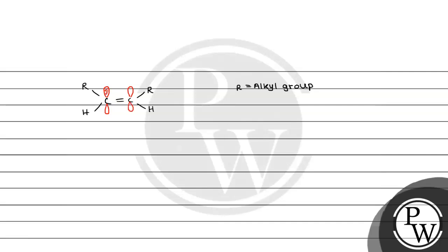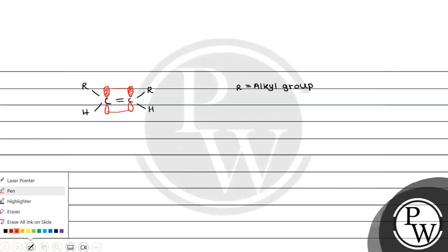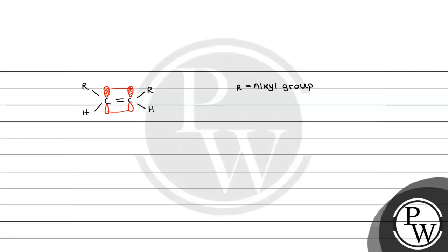So this pi bond that I am showing you — if this double bond tries to rotate, what will happen? This pi bond will break. We know that no compound wants to break its bond unless external energy is provided. So this pi bond will not break; it will not try to rotate.